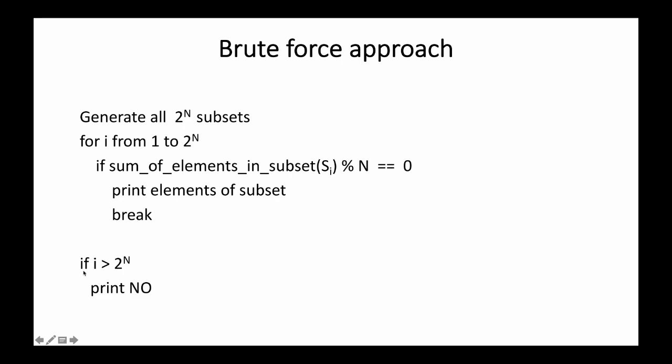At the end, we check if the index was greater than 2^n, meaning there was no subset divisible by n, so we simply print 'no'.